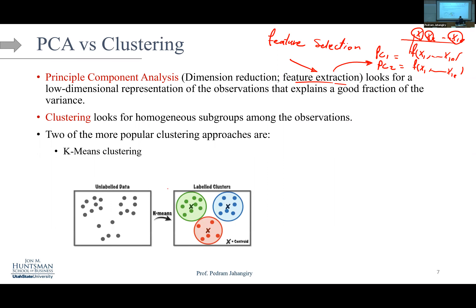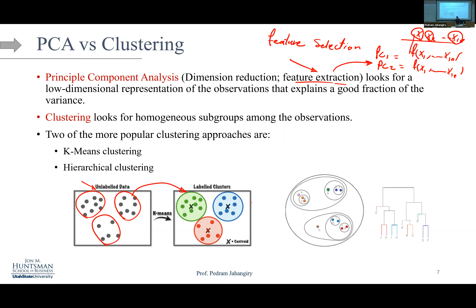In k-means clustering, you have to pre-specify the number of clusters k — say 2, 3, or 4. The algorithm then labels the data accordingly. In hierarchical clustering, the idea is different: you build a tree structure called a dendrogram. With 11 observations, for example, depending on what threshold you choose, you'll end up with different numbers of clusters.